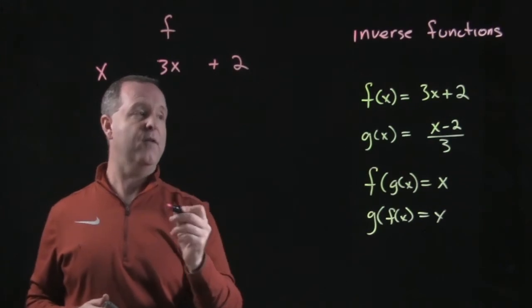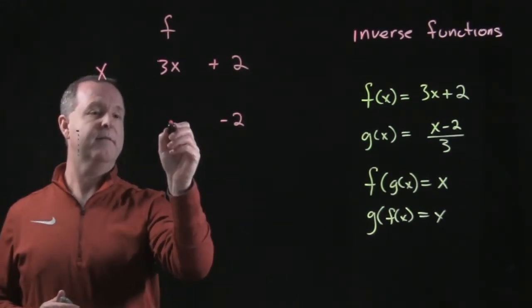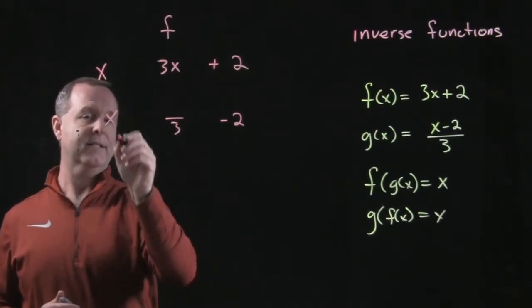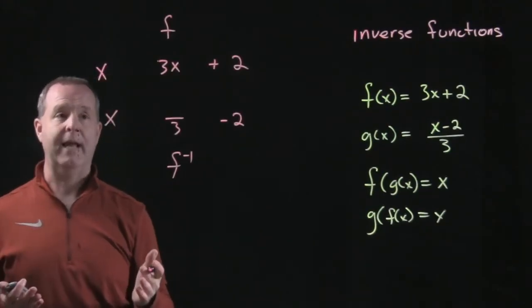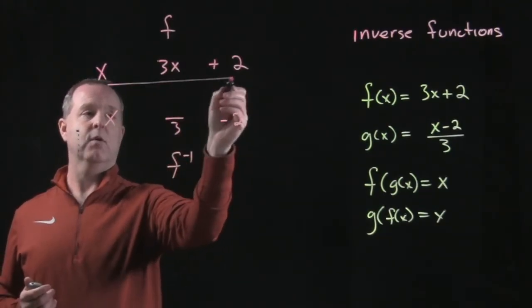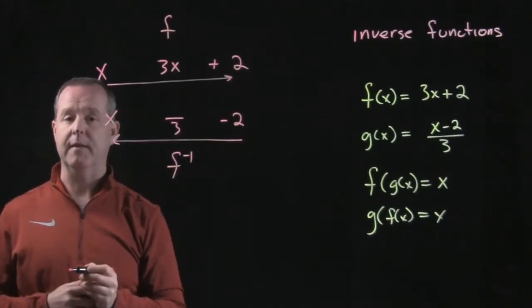Now reversing back the other way, notice that I'm subtracting 2, then I'm dividing by 3, and I'm back to x. And that's where the inverse is happening. So we have a process that's going that way, and then it's being undone by going the other direction.